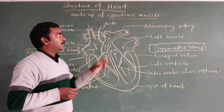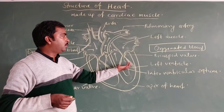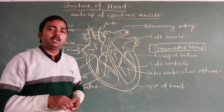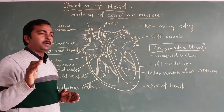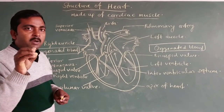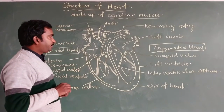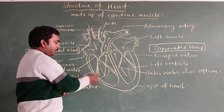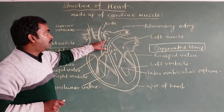After oxygenation, the blood comes into the left atrium and then into the left ventricle. The left ventricle pumps the oxygenated blood through the aorta to all parts of the body. In this way, the contraction and relaxation of the heart chambers leads to the pumping of blood through the arteries and ventricles.